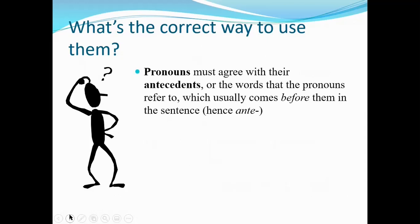Pronouns have to agree with their antecedents — the word that comes before the pronoun that the pronoun refers to. That's the 'ante' part. If you ever play poker, you're asked to do an ante, which is a pre-bet where you put money into the pot before anything else. It's called an ante because you're doing it before anything else goes on. The same way, something in a sentence or paragraph may be the antecedent of a pronoun, and it has to be clear.